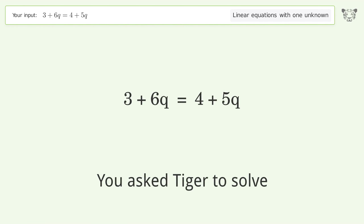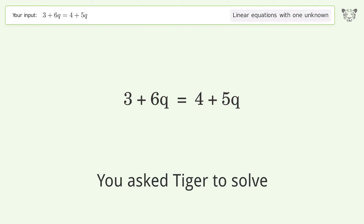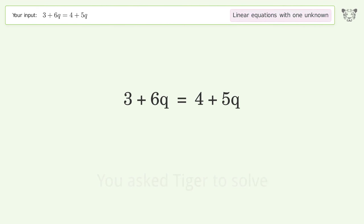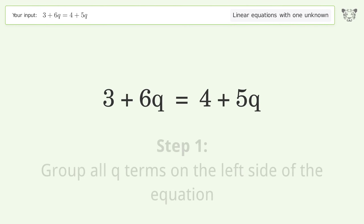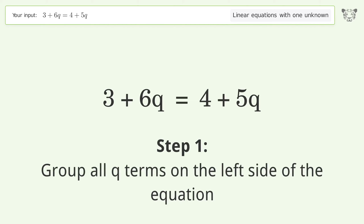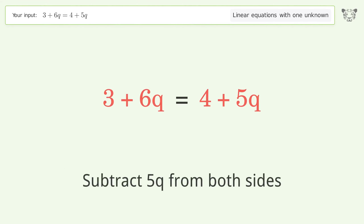You asked Tiger to solve this — it deals with linear equations with one unknown. The final result is q equals 1. Let's solve it step by step: group all q terms on the left side of the equation by subtracting 5q from both sides.